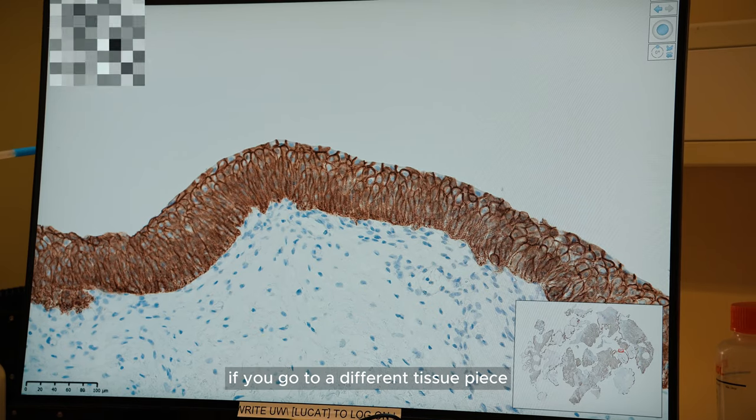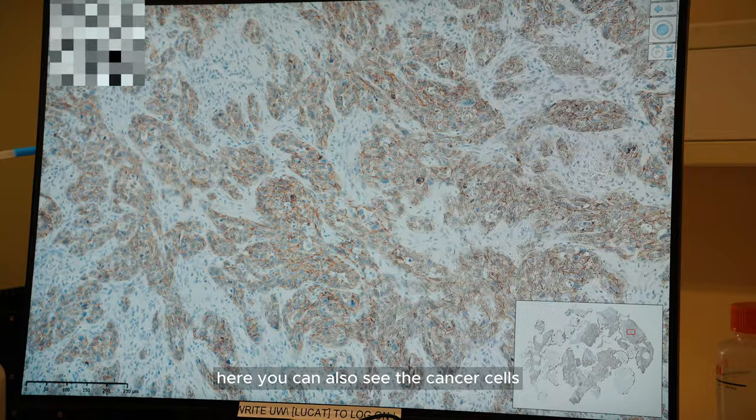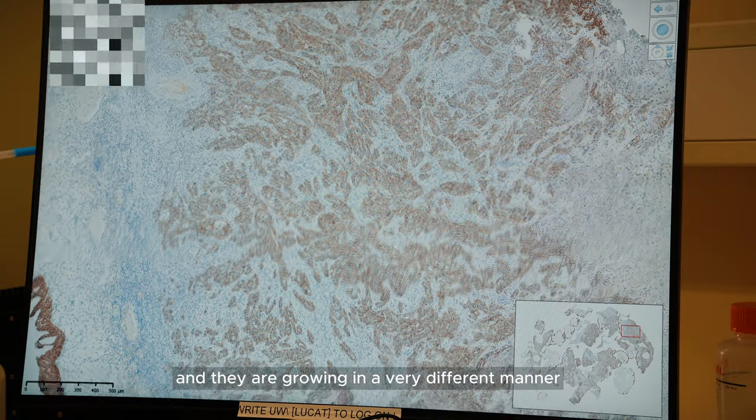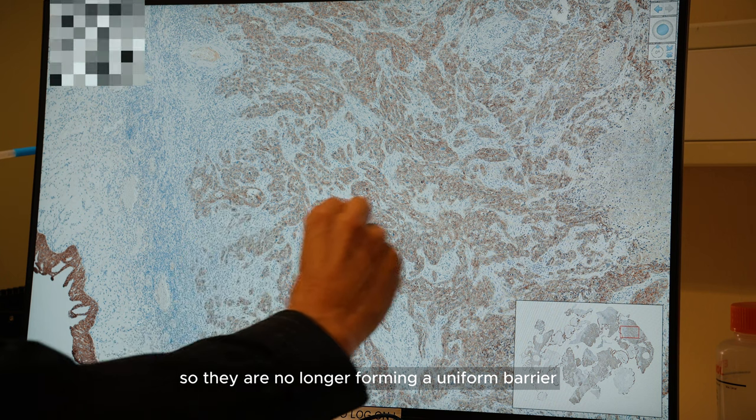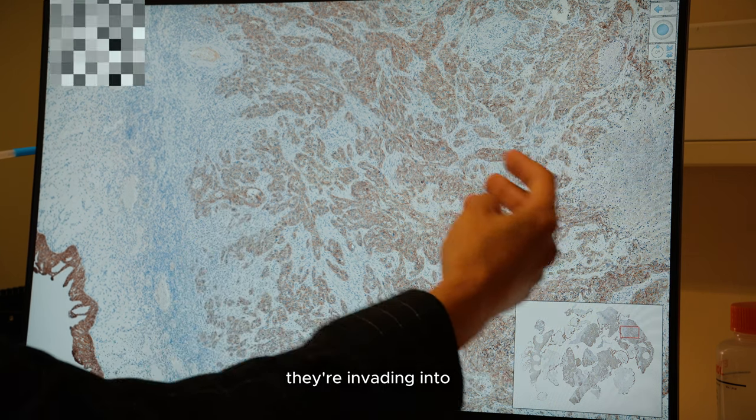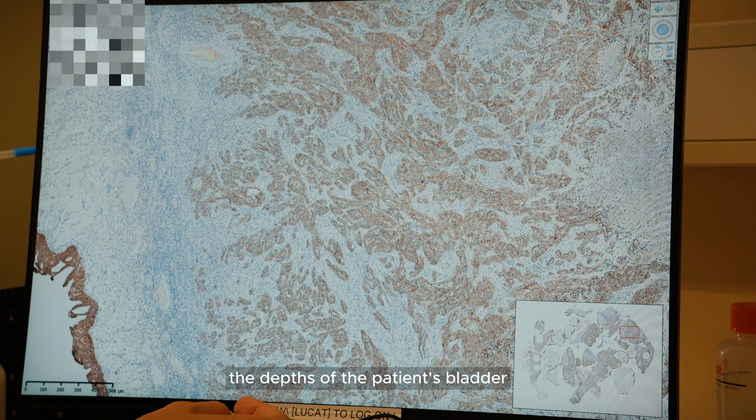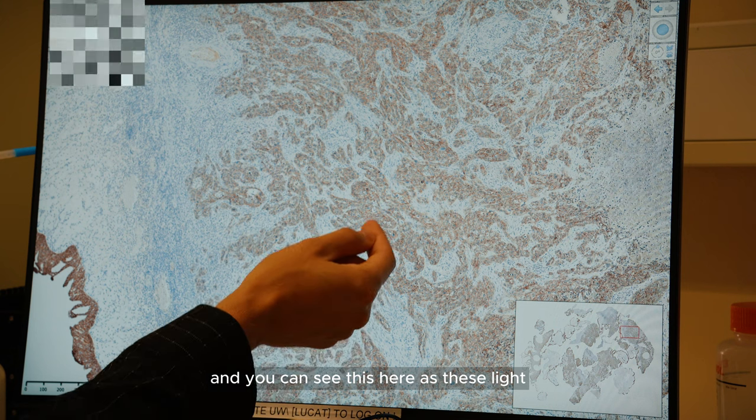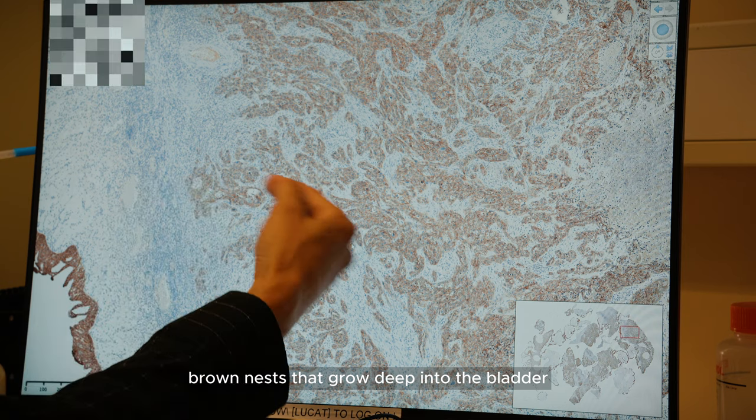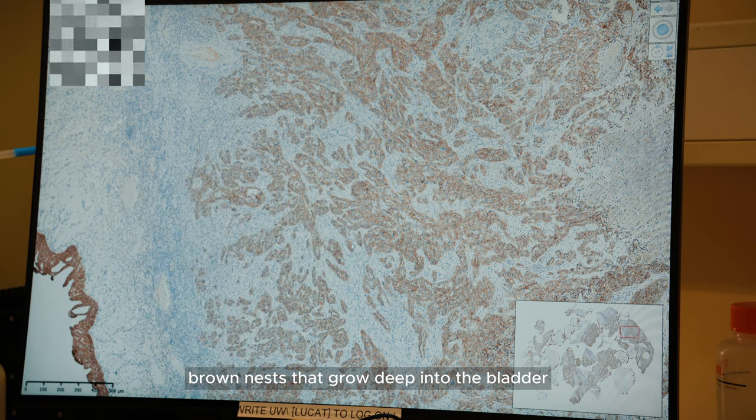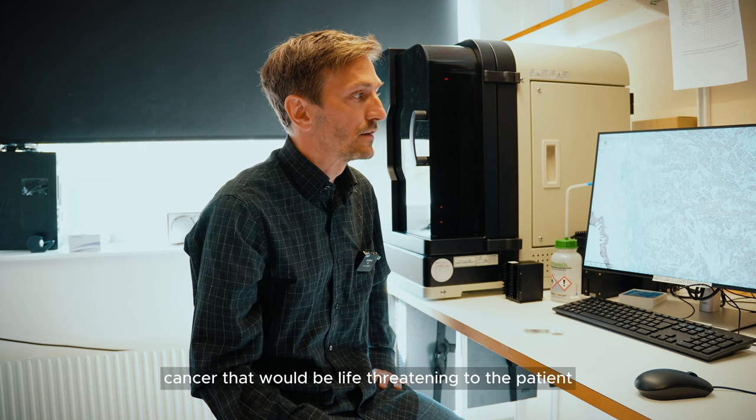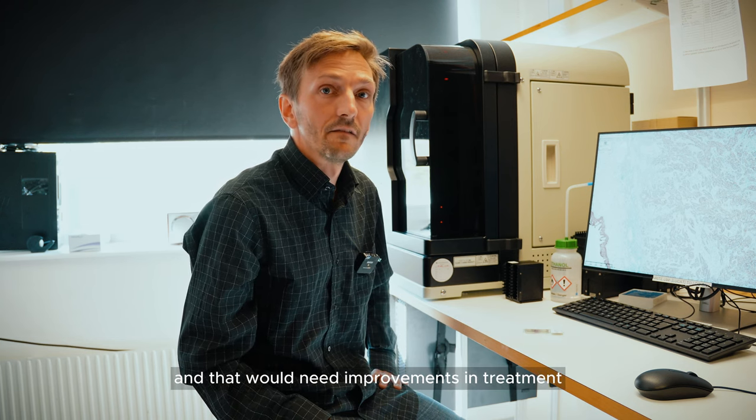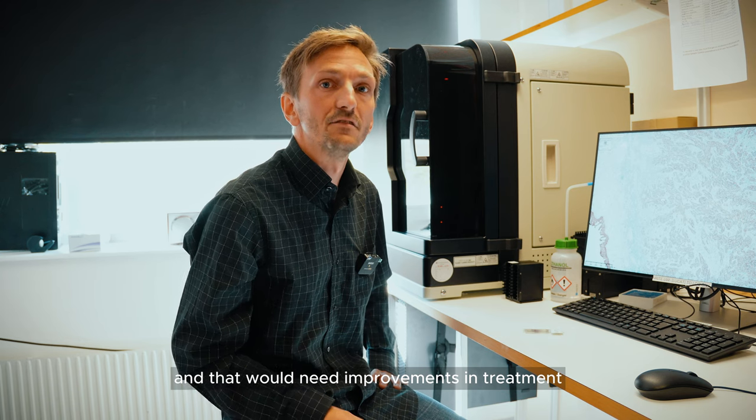If you go to a different tissue piece here, you can also see the cancer cells and they are growing in a very different manner. They are no longer forming a uniform barrier—they are invading into the depths of the patient's bladder. You can see this here as these light brown nests that grow deep into the bladder. This is the type of cancer that would be life threatening to the patient and that would need improvements in treatment.